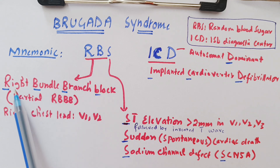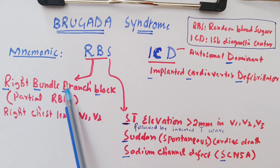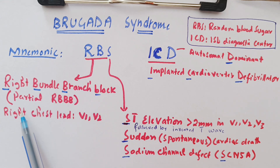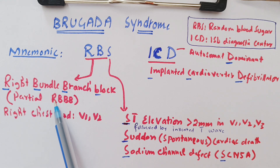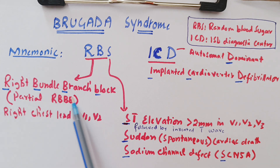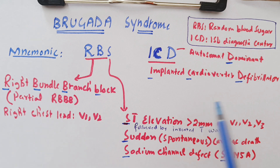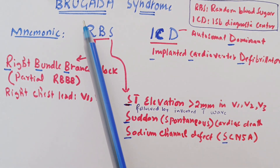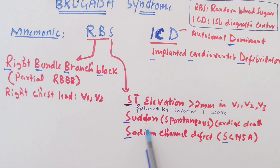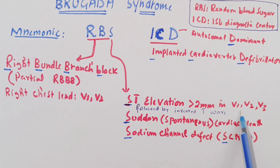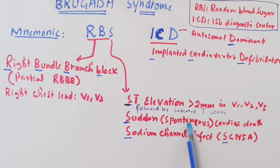The R-B is for Right Bundle Branch Block — we can say partial RBBB. And we will look at the right precordial leads, which are V1 and V2. From the S, we can say ST elevation more than 2mm in V1, V2, and V3, followed by an inverted T wave.